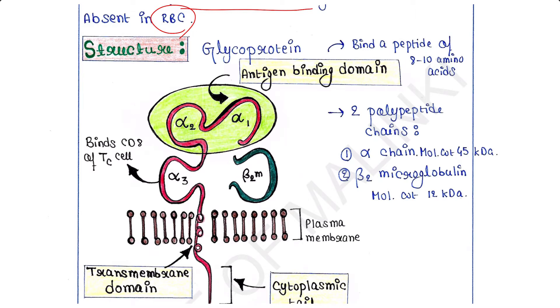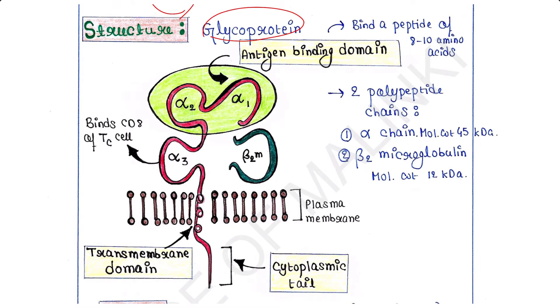Class 1 MHC molecule is a glycoprotein. It contains two polypeptide chains: the alpha chain and beta 2 microglobulin. The molecular weight of the alpha chain is 45 kilodalton, and the molecular weight of beta 2 microglobulin is 12 kilodalton.